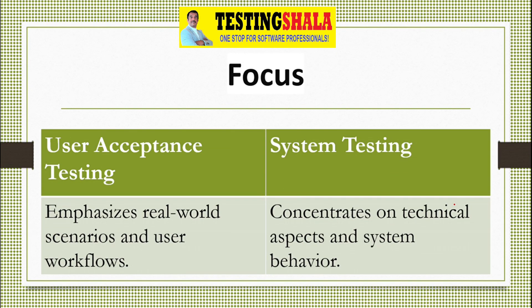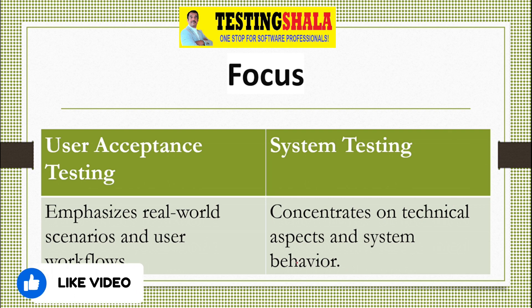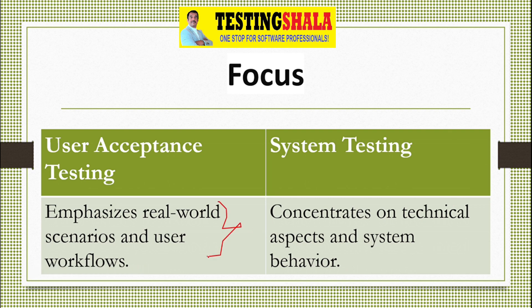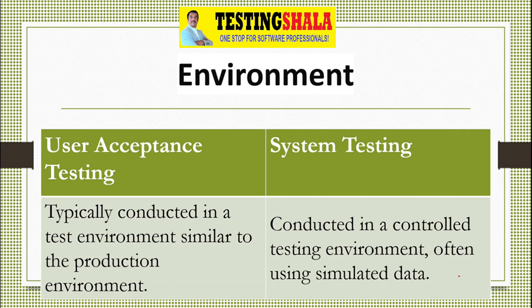The next key difference is focus. User acceptance testing emphasizes real-world scenarios dealt by the end user and workflows. In system testing, we are more focused on technical aspects and system behavior.